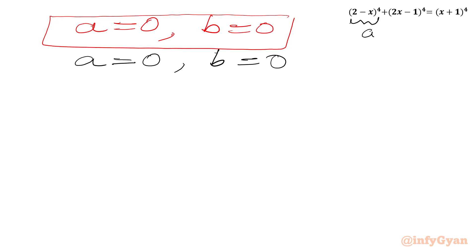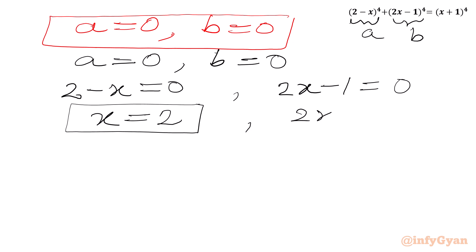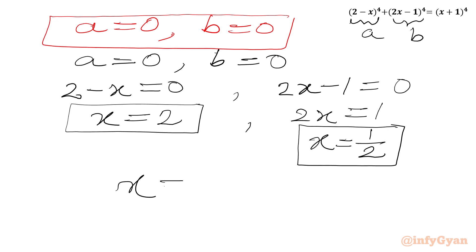Since a was (2 minus x) and b was (2x minus 1): setting a equal to 0 gives 2 minus x equal to 0, so x equal to 2. Setting b equal to 0 gives 2x minus 1 equal to 0, so 2x equal to 1, and dividing both sides by 2 gives x equal to one half. So our final solutions are x equal to 2 and x equal to one half.